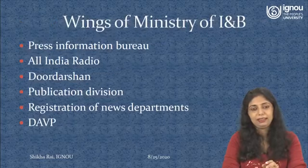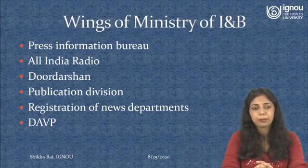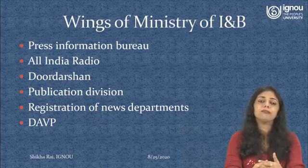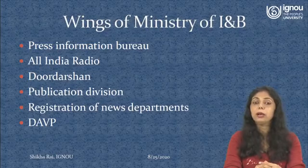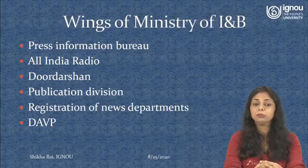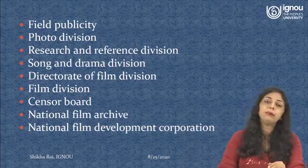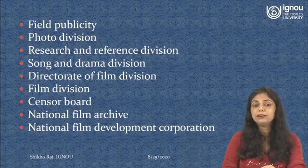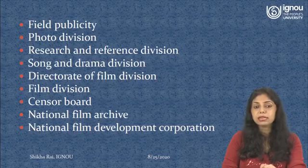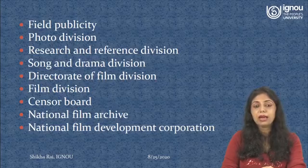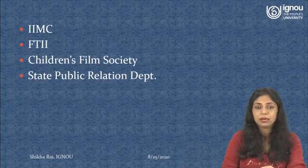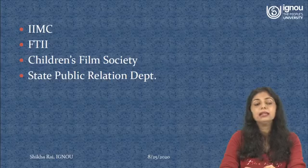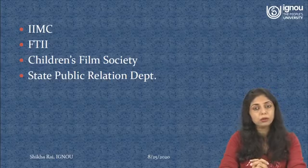Now let us look at the wings of the Ministry of Information and Broadcasting — these are the government media organizations we will be discussing. They include: Press Information Bureau, All India Radio, Doordarshan, Publication Division, Registrar of Newspapers, DAVP, Field Publicity, Photo Division, Research and Reference Division, Song and Drama Division, Film Division, the Censor Board, the National Film Archives, the National Film Development Corporation, Indian Institute of Mass Communication, FTII, Children's Film Society, and state public relations departments.